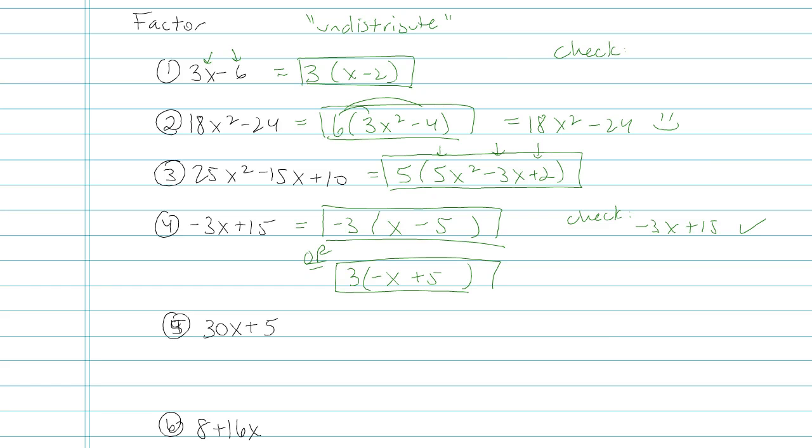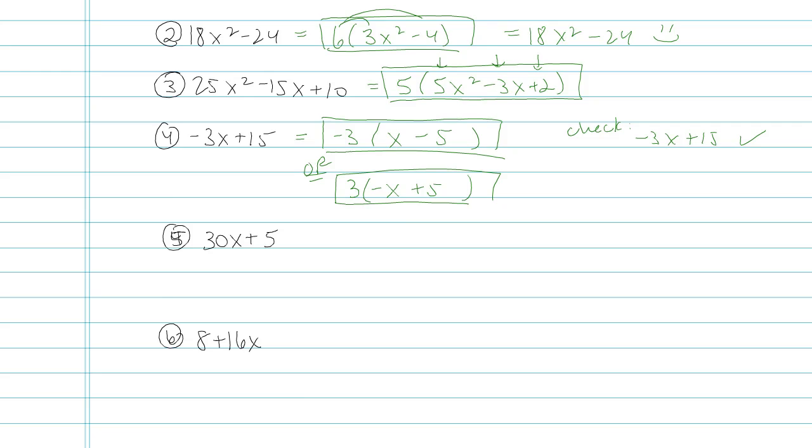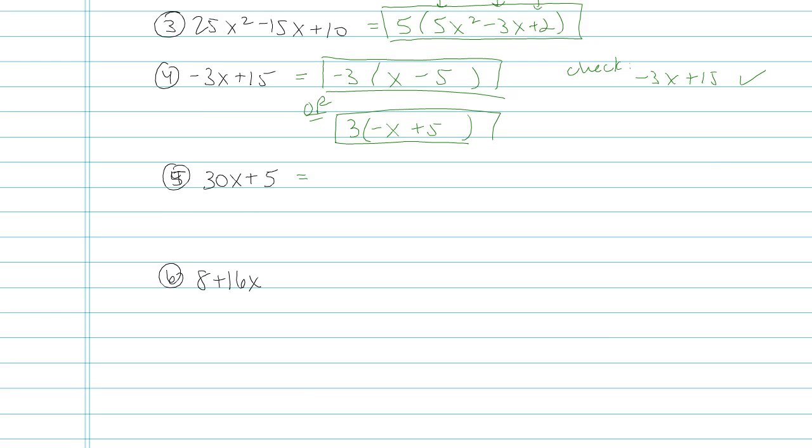Numbers 5 and 6, I'm going to show you some common student mistakes that I see. In number 5, a lot of students recognize that the greatest common factor number is 5. So they'll write 5 and then parentheses 6x, and then they think they're done.